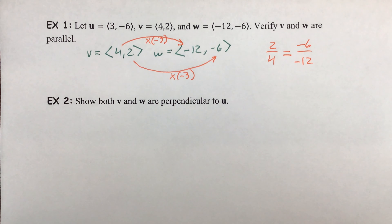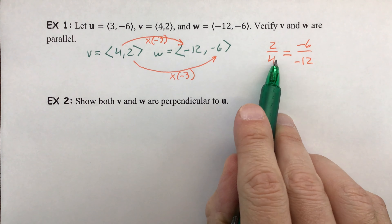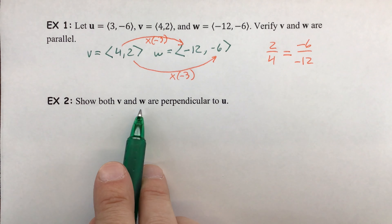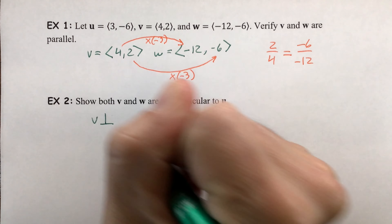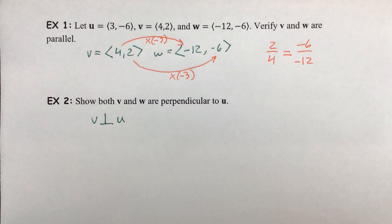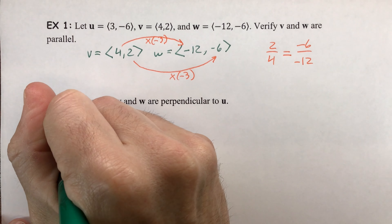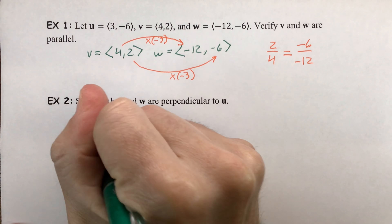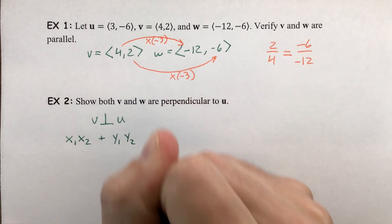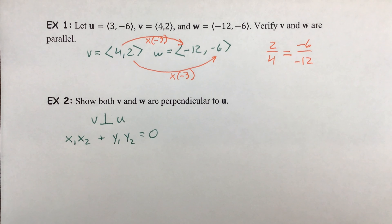For example two, we're going to show that both v and w, which are parallel to each other, are perpendicular to u. So we'll do them separately. First, let's check v perpendicular to u and verify that's true. The way we're going to do that is to use our new equation: if vectors are perpendicular, then the product of their x-components plus the product of their y-components equals 0. All we need to do is plug in the numbers and confirm it does come out to 0.